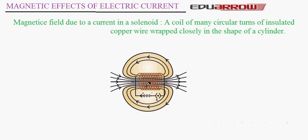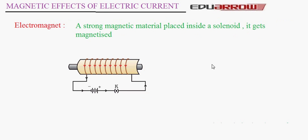Let us understand what is an electromagnet. When a strong magnetic material like steel is placed inside a solenoid, it gets magnetized, and the magnet thus formed is known as an electromagnet. It is shown here that a steel rod is placed in the solenoid; when current passes through the solenoid, the magnetic field magnetizes the steel rod, and this becomes our electromagnet.